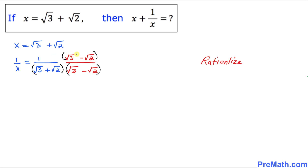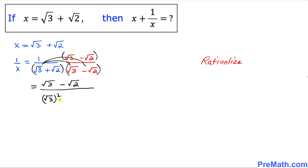Multiplying 1 times the conjugate on the top gives us square root of 3 minus square root of 2. For the denominator, we FOIL it out: square root of 3 times square root of 3 gives square root of 3 squared, then negative square root of 3 times square root of 2, then plus square root of 2 times square root of 3, and finally minus square root of 2 squared.